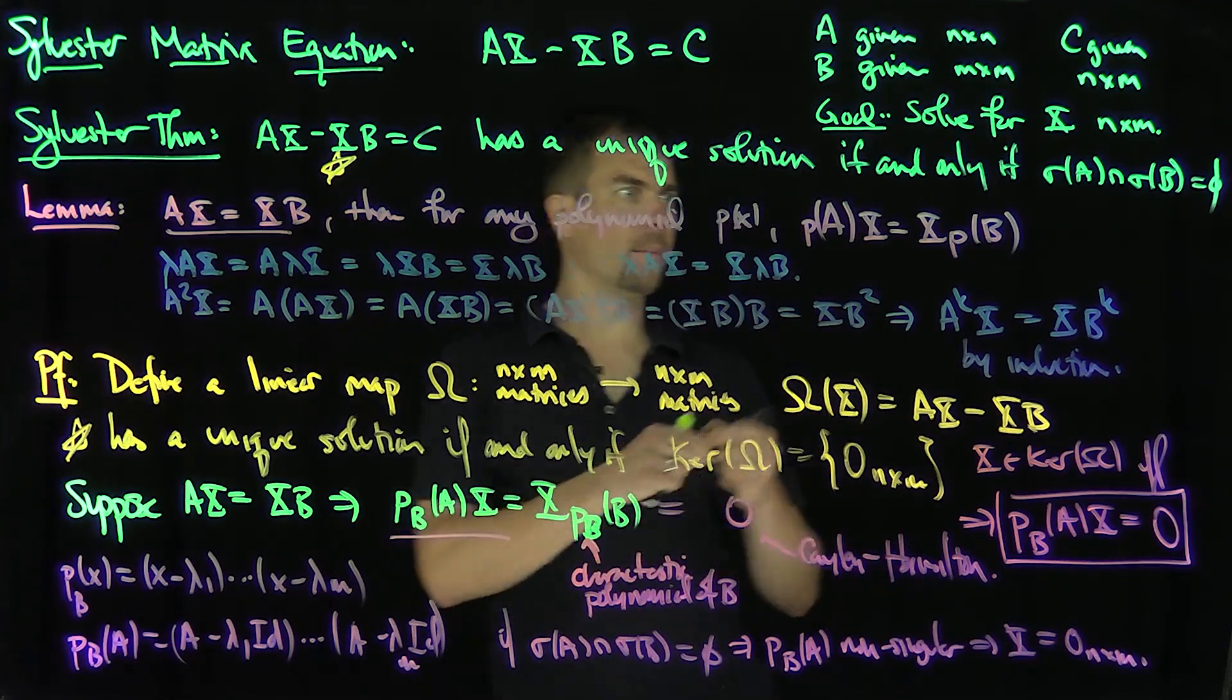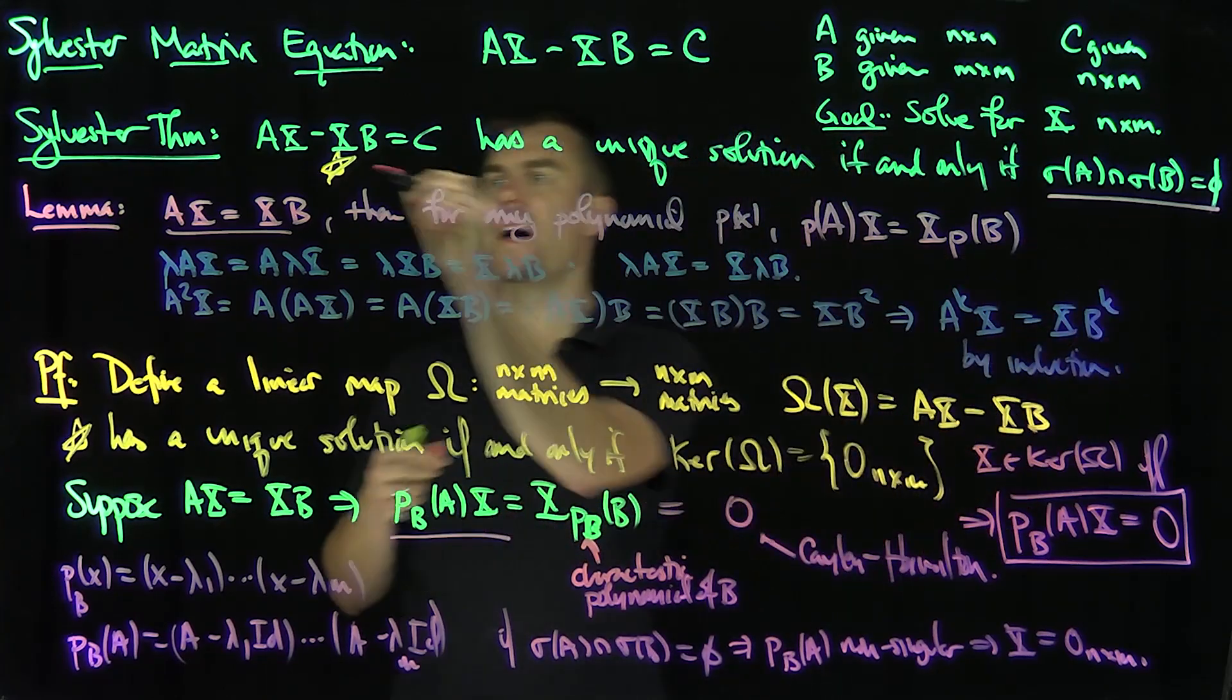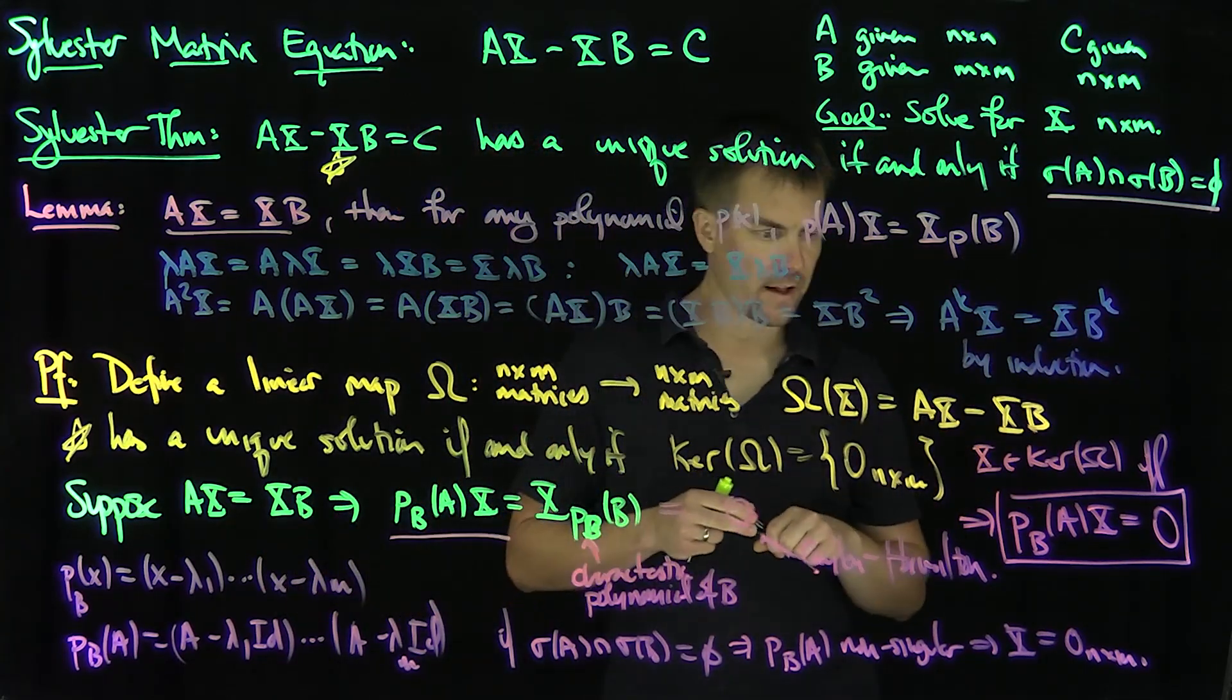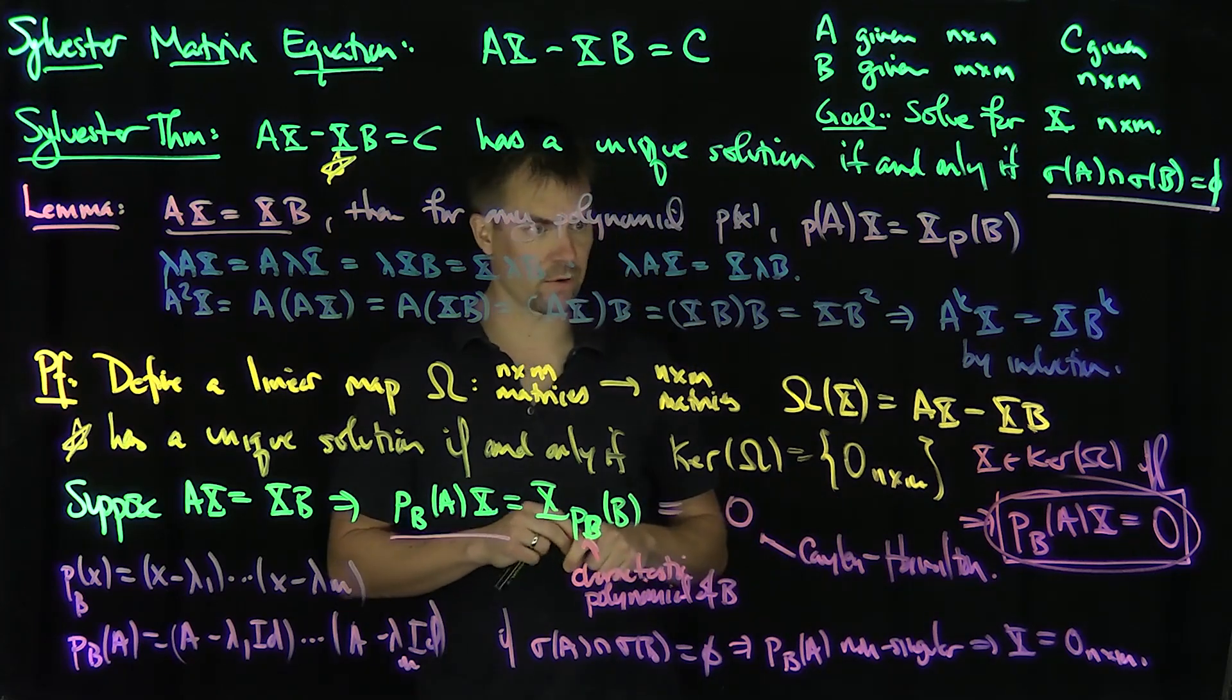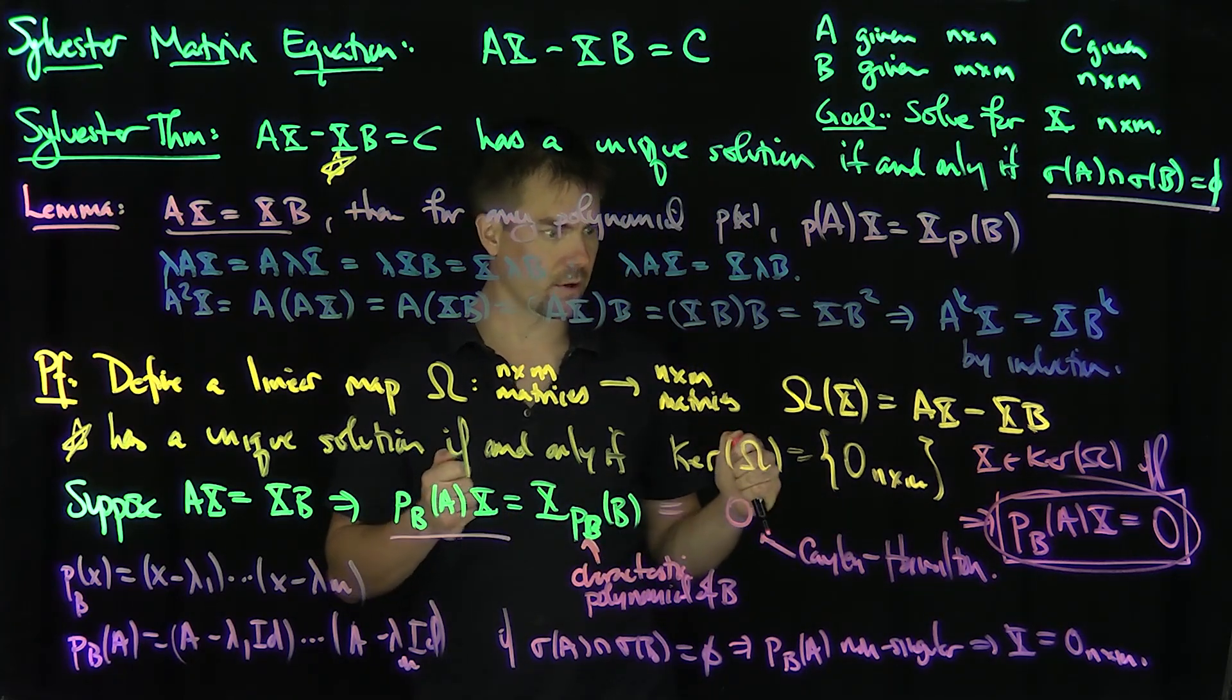Conversely, so in other words, if this is true, then there's a unique solution. Now let's suppose there is a unique solution to this equation. That means there's zeros in the kernel.